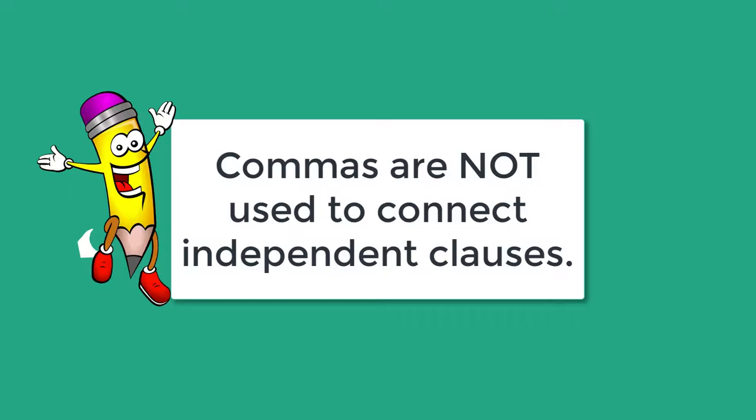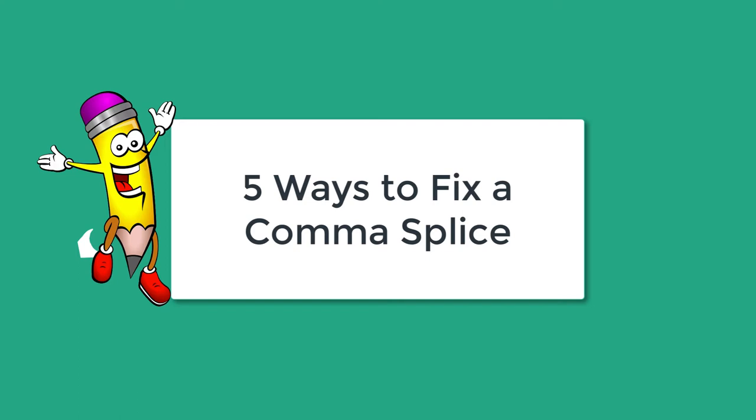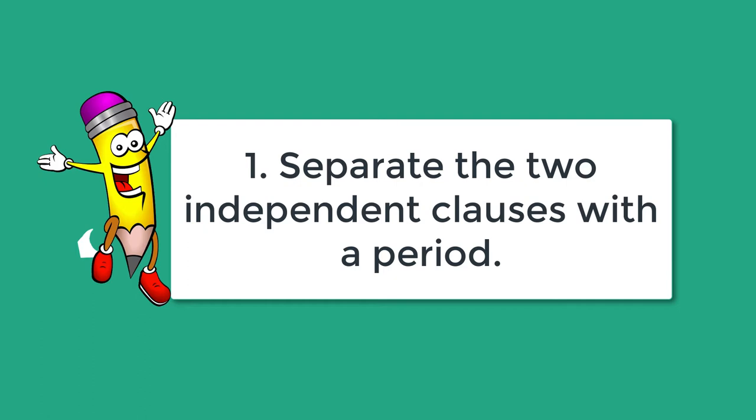These sentences may sound okay to your ear, but technically they are incorrect, because again, commas are not used to connect independent clauses. So we are going to learn the five ways you can use to fix a comma splice. The first one is the easiest way: simply separate the two independent clauses with a period — in other words, make two separate sentences.